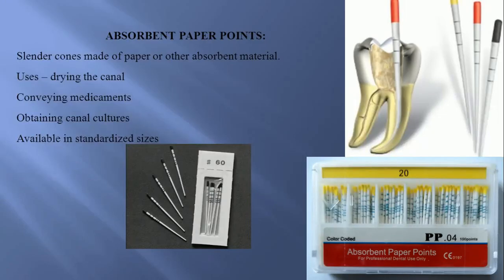First of all we will talk about absorbent paper points. These are made of paper or other absorbent materials like cotton. Their uses are: the primary function is drying the canal before doing obturation and before packing intracanal medicament. They are also used for conveying a medicament into the canal, and for obtaining canal cultures. These paper points are available in standardized sizes.